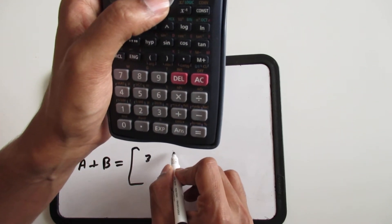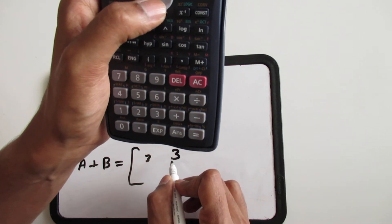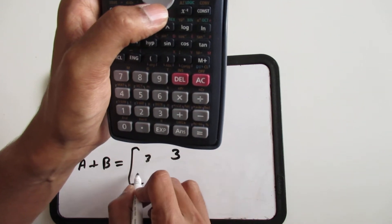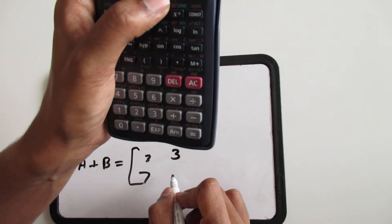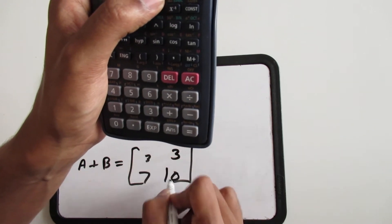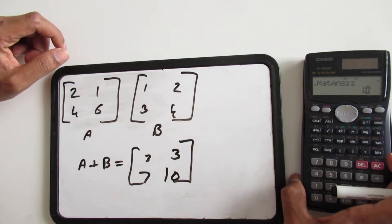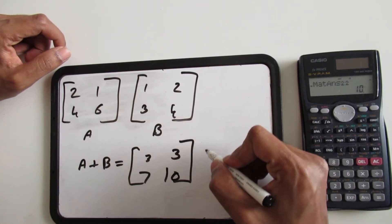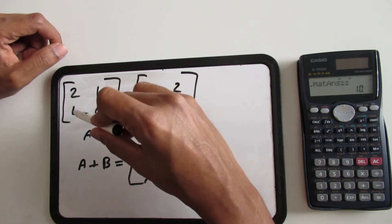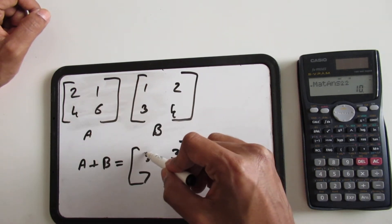If we were going to go ahead and do a little addition of these two matrices, we would have A plus B. That's 2 plus 1, so that's 3. 1 plus 2 is 3 again. 4 plus 3 is 7. 6 plus 4 is 10.